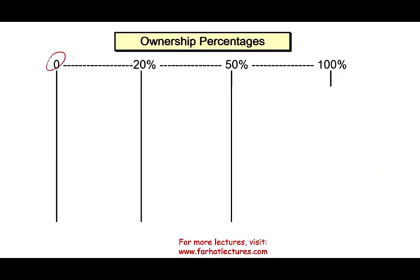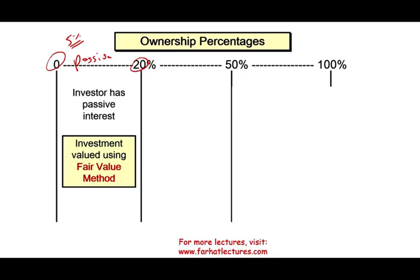If you own between 0% and 20% of the company's stock, you are considered a passive investor. From an accounting perspective, we assume you have no say in the company. In the real world you might have some influence, but for accounting purposes, you are passive. Since you are passive, you are going to be using the fair value method — meaning you have to report your investments at fair value, accounting for them whether they go up or down in value.